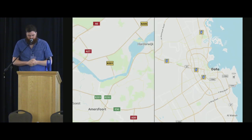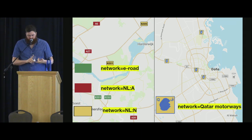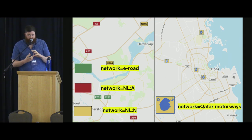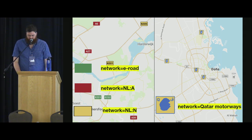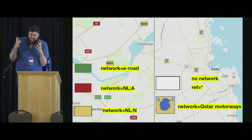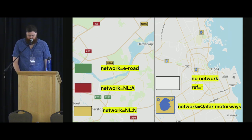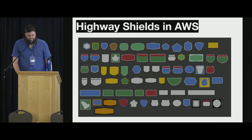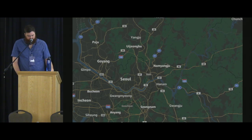Looking back at the map, in the Netherlands we've got three different shields: international green E-roads and national level red and yellow shields. Over in Qatar, the Qatar Motorways Network uses the shape of Qatar — it's like a map within a map, which is kind of cool. It's heavily generalized at the scale you see it at. There are also white square shields as a fallback for generic routes when there's no network tag but there is a ref tag, indicating an important route. We also made all of these for dark mode as well.